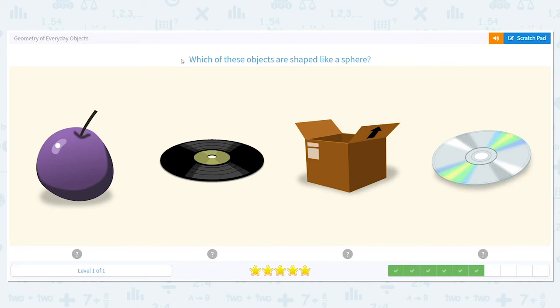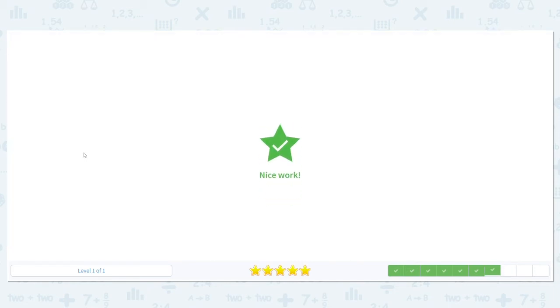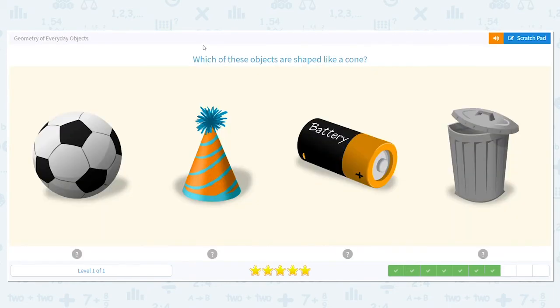Next one. Which are shaped like a sphere? A sphere is what we would consider to be a ball. It has no flat sides. It has no points. The grape is. And when we do, we're not worried about the little stem on it.